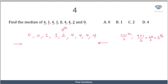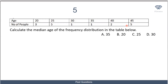Another way to find it is to count inward from both ends simultaneously until they meet at the middle point. Both methods coincide at 2, confirming that 2 is the median — the middle number. So the correct option is C, which is 2.